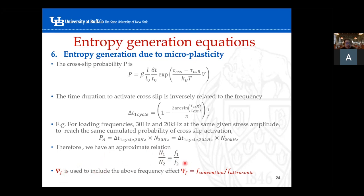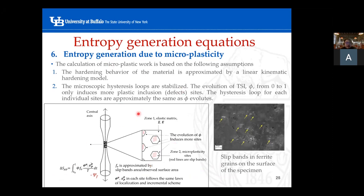By obtaining this positive relationship, we use the VF factor to include the frequency effect. The VF factor is approximately the conventional operating frequency divided by the ultrasonic vibration frequency, used to include the frequency effect. Everything else is the same, but the only difference is that in the microplasticity model we add the frequency coefficient to our entropy generation equation. Under ultrasonic vibration at 20 kHz, we need more time to actually generate the microplasticity.